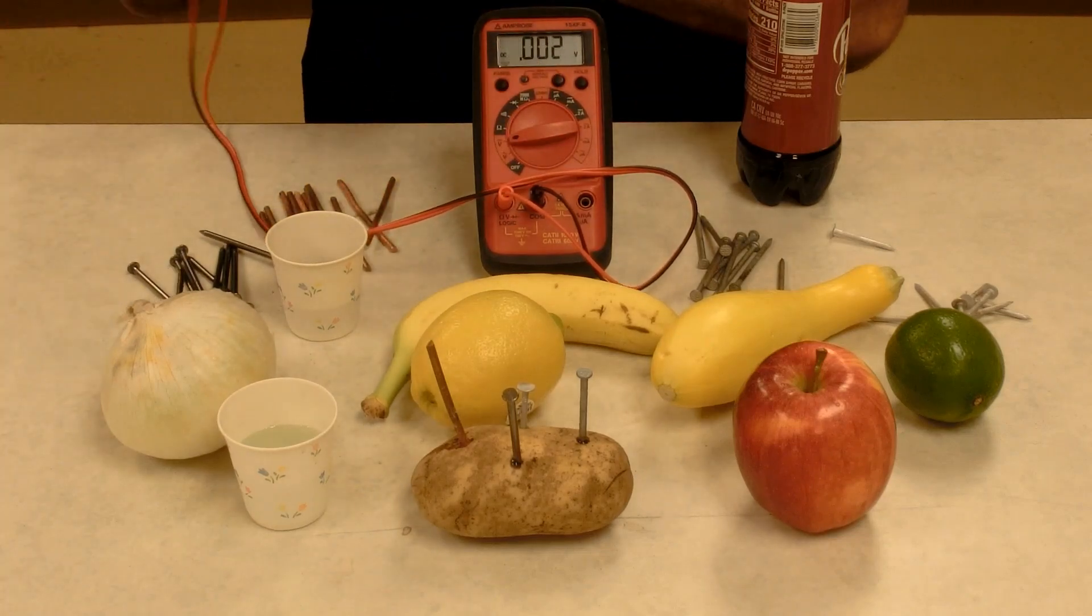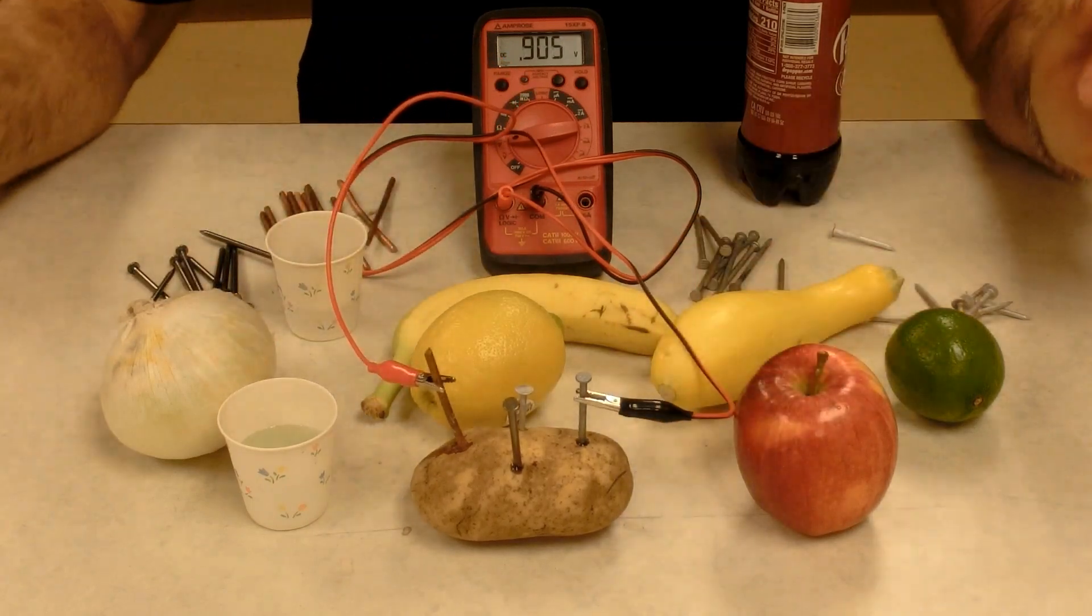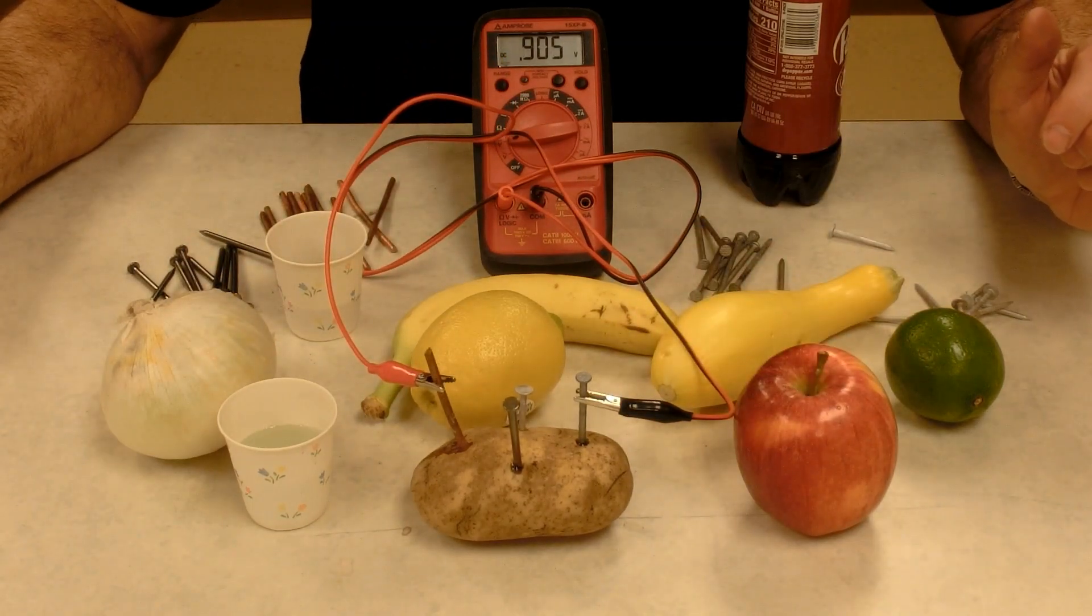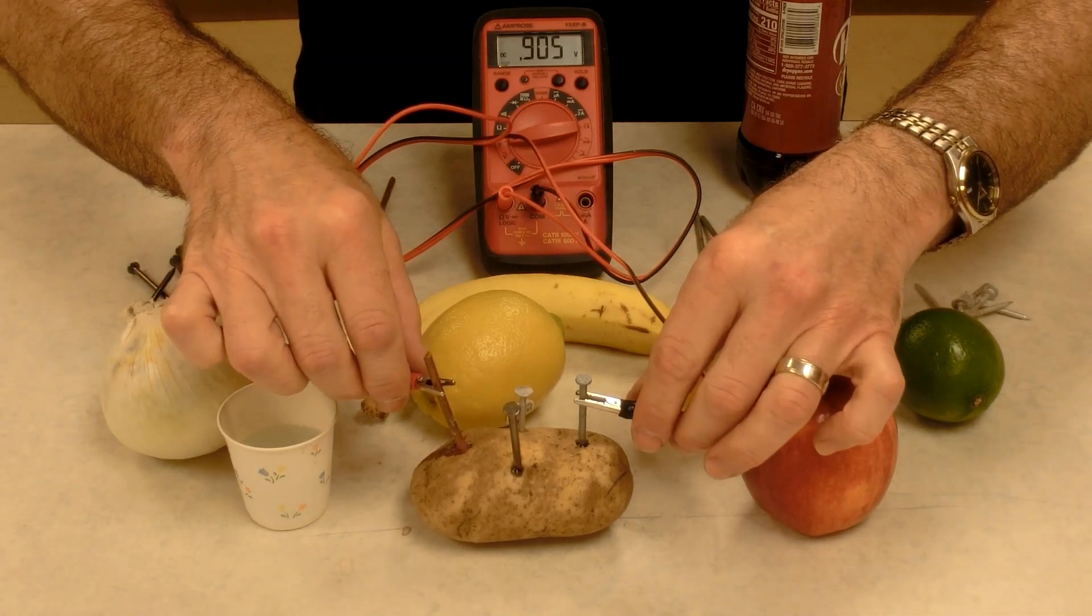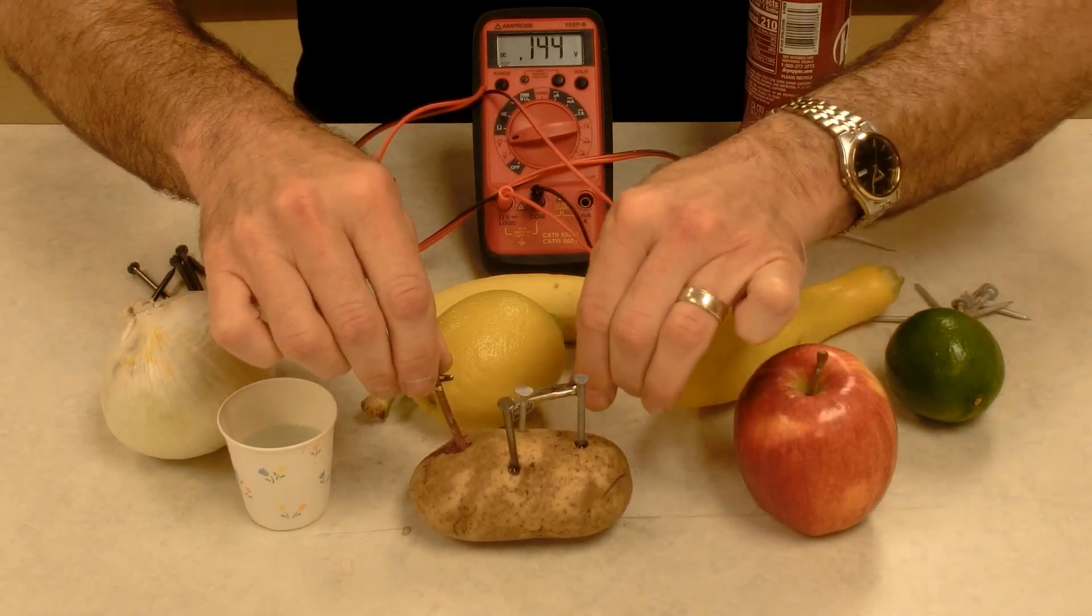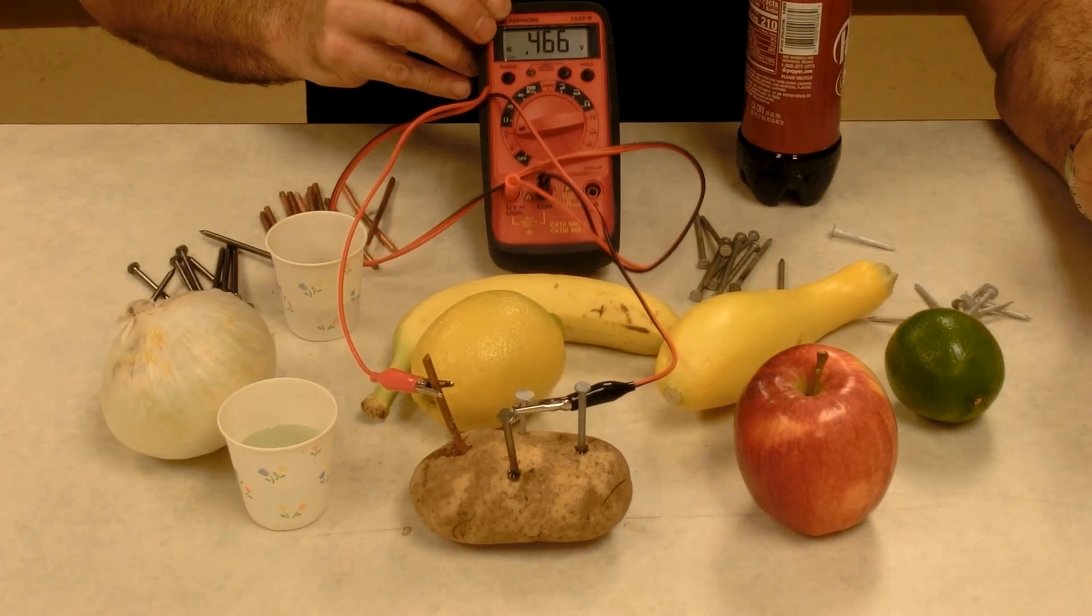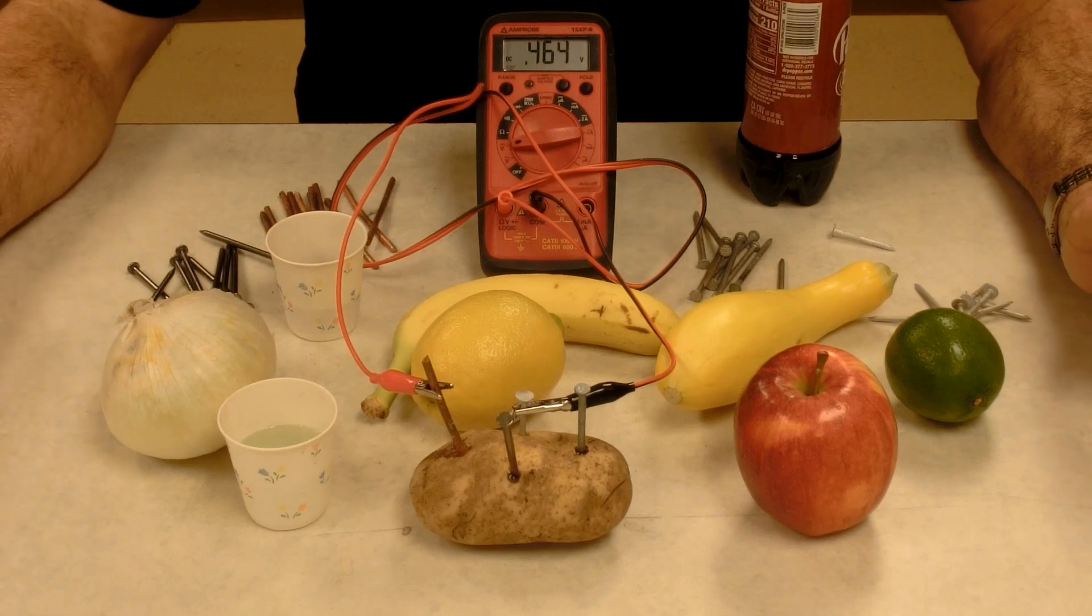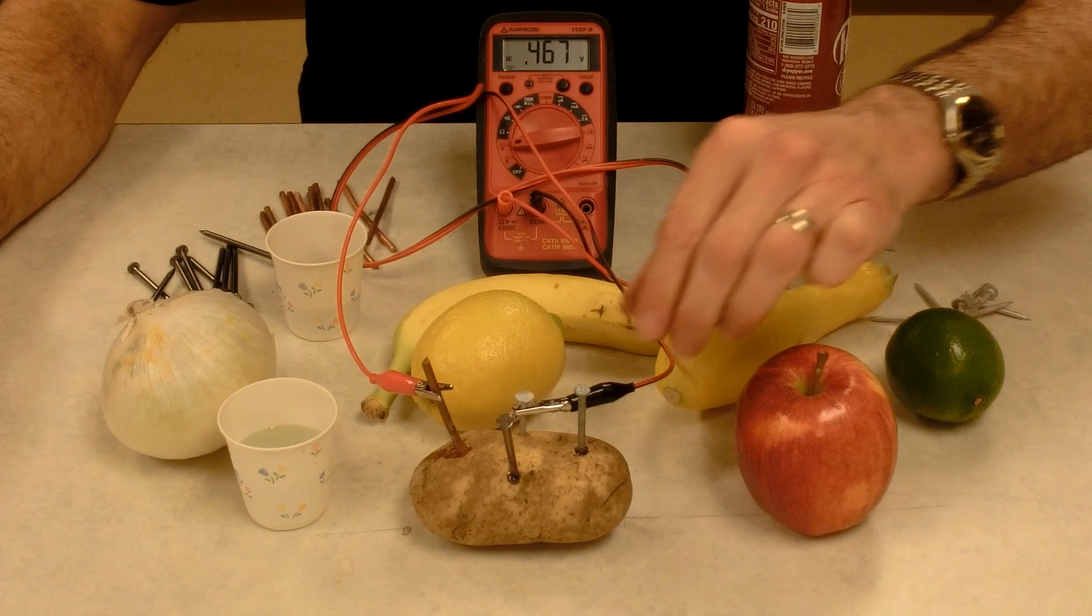So here's the potato. We've already done the copper and zinc for the potato. It's reading right now about 0.9 volts. Let's see what happens when I do copper with aluminum. Copper and aluminum are only giving me about 0.47 volts, 0.46 something. So I don't get as much voltage with copper and aluminum.